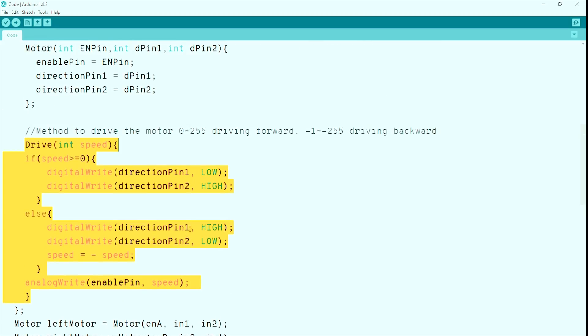If it's from 0 to 255, the motor will drive forward. If it's 0 to negative 255, it will drive backwards.